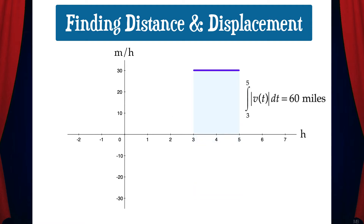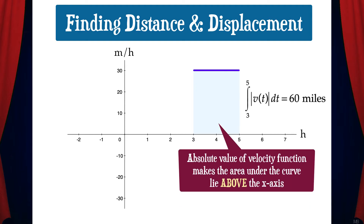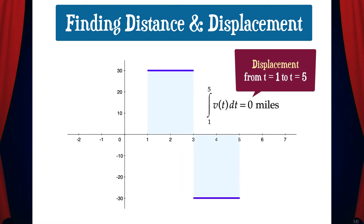If we want to know the total distance that the car traveled between t equals 3 and 5, we would need to first take the absolute value of the velocity and then find the definite integral. Taking the absolute value of the velocity function makes the area under the curve lie above the x-axis instead of below, which means the definite integral is positive. Remember, distance is always positive. And note that if we find the definite integral from 1 to 5 of the original velocity function, where part of the function is above the x-axis and the other part is below, the result is 0. This is the car's displacement from t equals 1 to t equals 5.